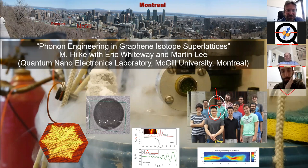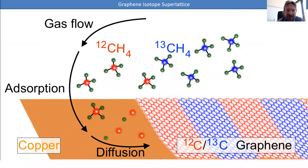Eric has actually just submitted his thesis on this work, which is an important part of it. What I want to discuss today is relatively simple: the idea is when we made these isotope superlattices of graphene by alternating carbon-12 and carbon-13.